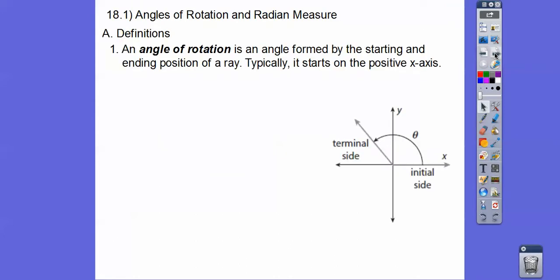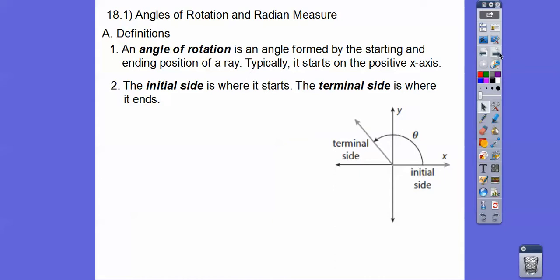So definitions here. The first one is an angle of rotation is an angle that's formed by a starting position of a ray. So typically we start it on the positive x-axis. This is called the initial side. This is called the terminal side. Where it starts is the initial side and where it ends is the terminal side. And so this would be called angle theta — that's the Greek letter theta.